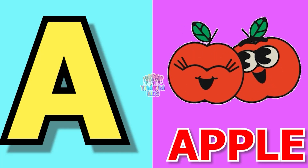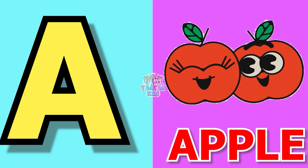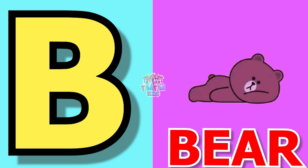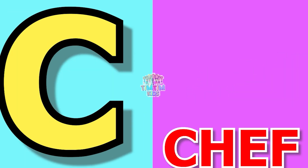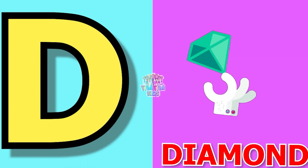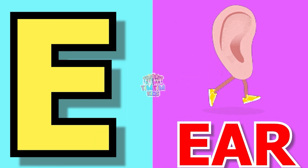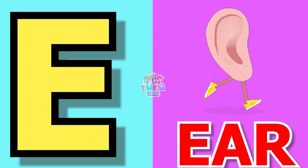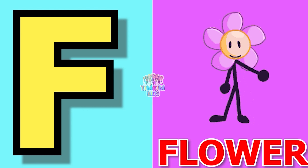A for apple, apple means shape. B for beer, beer means bhalo. C for chef, chef means bavarchi. D for diamond, diamond means hira. E for ear, ear means kaan. F for flower, flower means food.